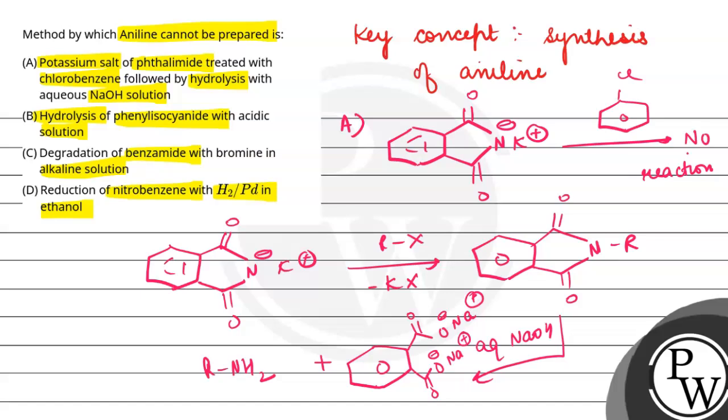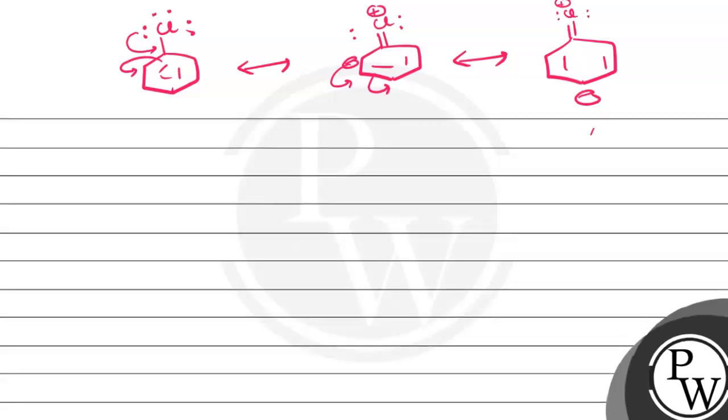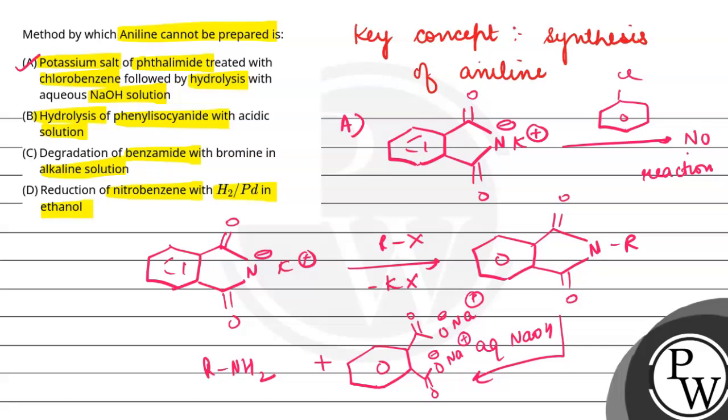So this carbon-chlorine bond, the C-X bond cleavage is difficult. The cleavage is difficult, so chlorobenzene does not react. So we cannot prepare aniline using the Gabriel phthalimide synthesis. This is the naming reaction because aryl halides do not undergo nucleophilic substitution. So the cleavage of C-X bond is difficult. If we draw further resonating structures, this is the resonating structures and we have the chlorine and carbon double bond.